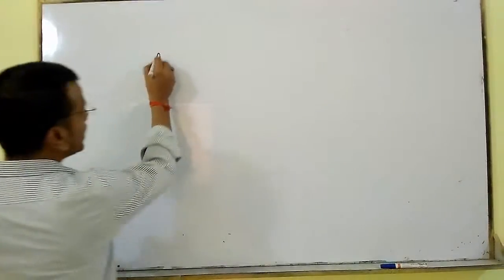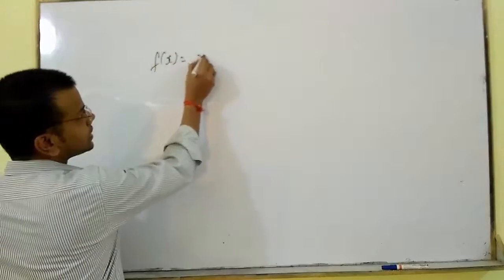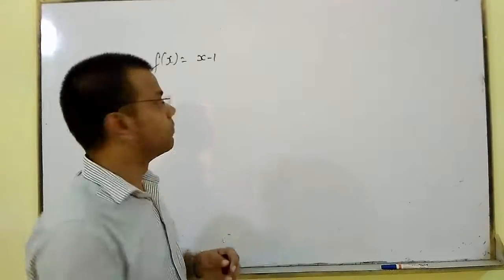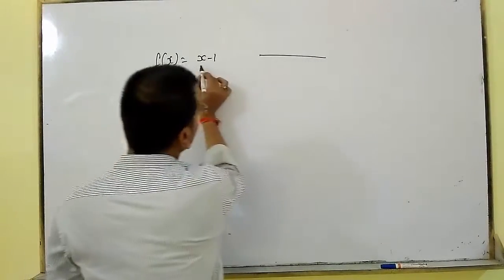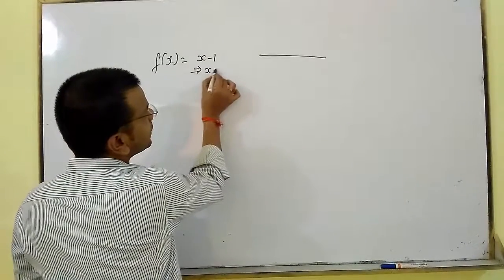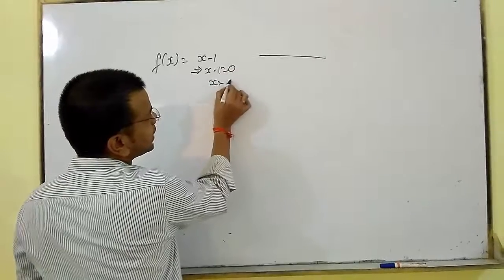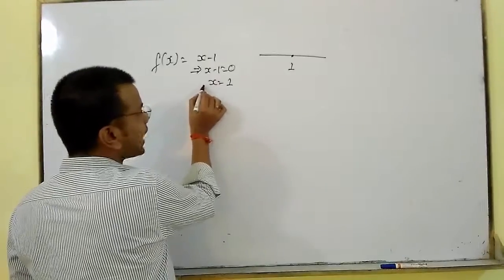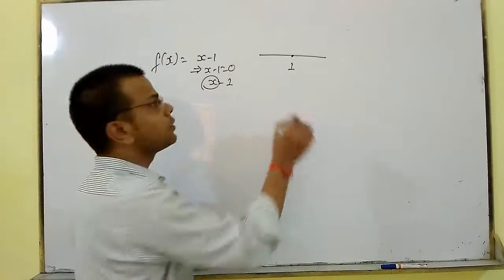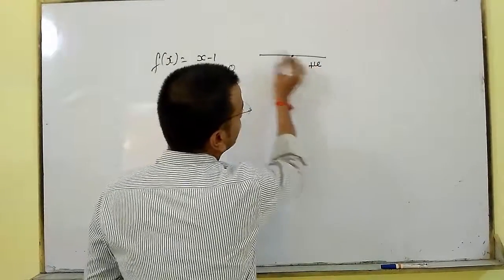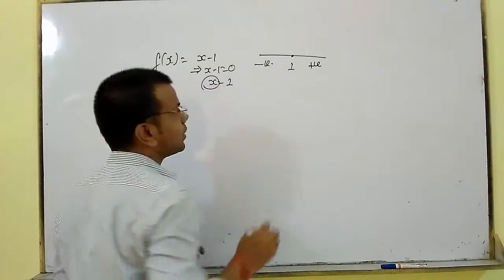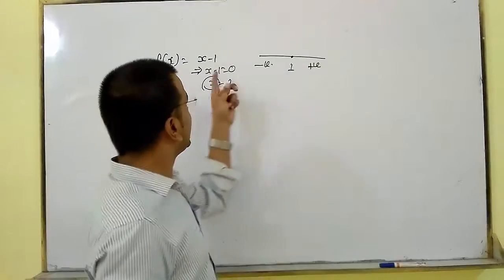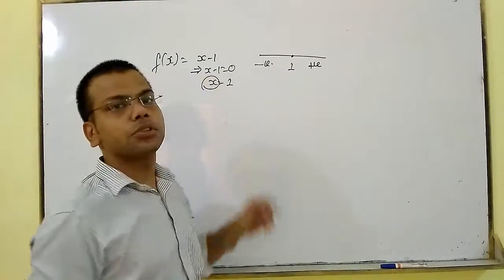If we have a function, say fx or y = x - 1, it is linear, so it is a straight line. The root of this is x - 1 = 0, so x = 1. We plot x = 1 on the number line. The sign of x is positive, so the extreme right should be positive and the next region should be negative. So any value of x more than 1, this function would be positive; any value of x less than 1, this function should be negative.